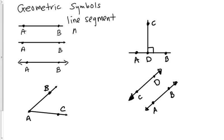So we name it by A and B with a line above it without any arrows, or we could have said B, A. So that's how we write line segments, how we name them.